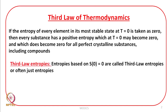The entropies which are based upon S₀ equal to zero are called third law entropies, or we just often call them entropies. By this definition, we say that at absolute zero all perfectly crystalline substances including compounds have entropy equal to zero.